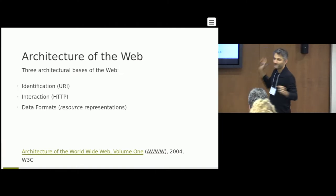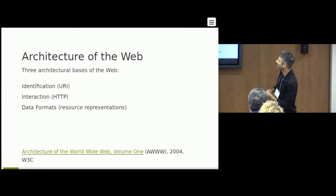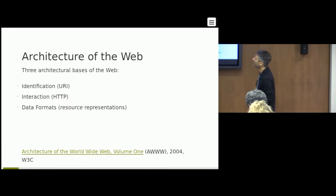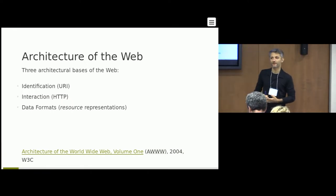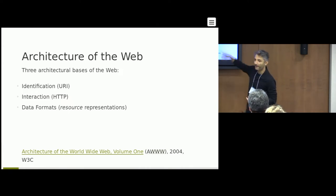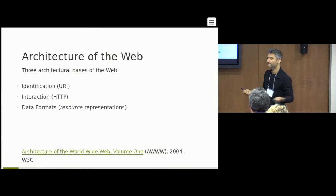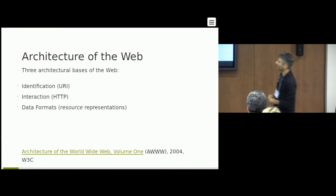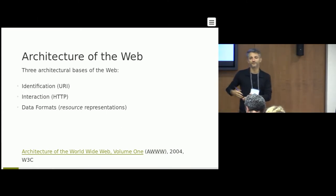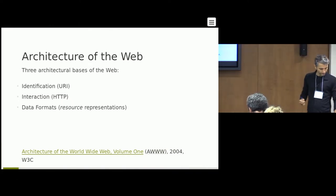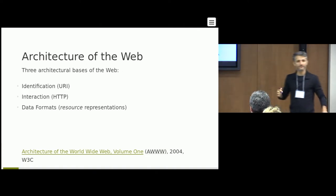The architecture of the web has three layers: a way to identify things, a way to interact with things, and the data or content we get hold of. Each of the web standards we have fits into one of these layers without affecting the others. So if you come up with a new URI scheme, you don't need to change all your formats. Data formats could range from HTML to an RDF serialization, and interaction can be HTTP or FTP and so on.